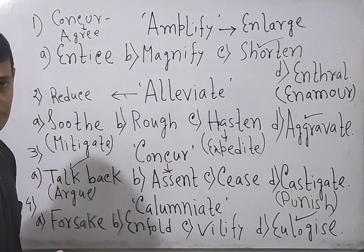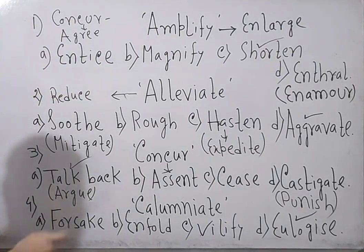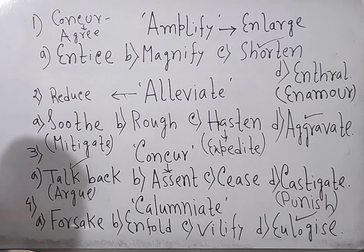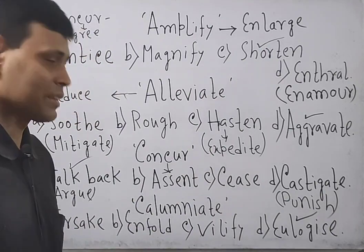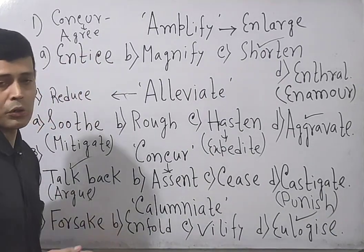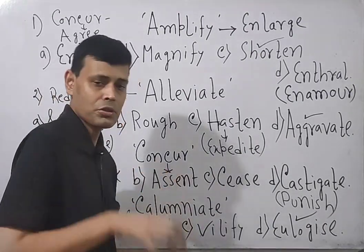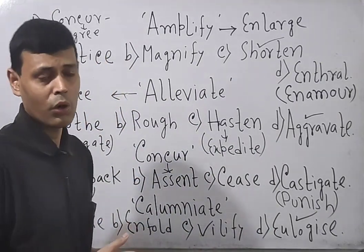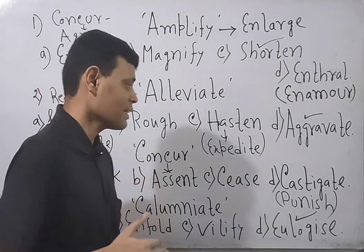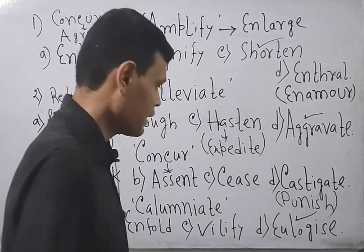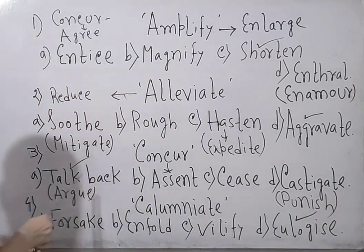Concur means agree or you can say assent, consent. There are many words: consent, assent, agree. Talkback means argue or clash of opinion. Cease means total stop or halt. Halt can be a noun or verb depending on the sentence structure or syntax. Castigate itself is a verb, it means punish. So here the opposite word is talkback.